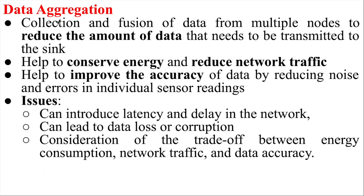For data aggregation, say for example you have two data A and B — you can take the average (A + B) / 2. That reduces it to one data point, meaning we can reduce data by 50% and save 50% energy. This helps conserve energy and reduce network traffic, because the data size is reduced, so network traffic automatically goes down.